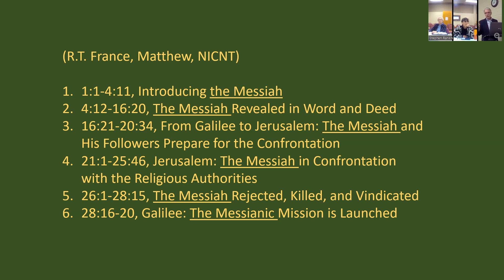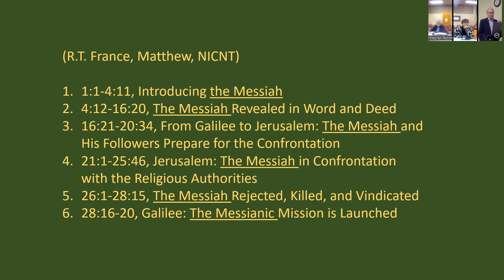That includes the genealogy, the story of Joseph having the interaction with the angel, the baby's birth, the Magi, the flight to Egypt and return, and John the Baptist. The next section, 4:12 through 16:20, is a big section — and that's the section we're going to be reading within tonight. Notice that he uses the word 'Messiah' in each of these statements. The section we're looking at tonight is 'The Messiah Revealed in Word and Deed.'